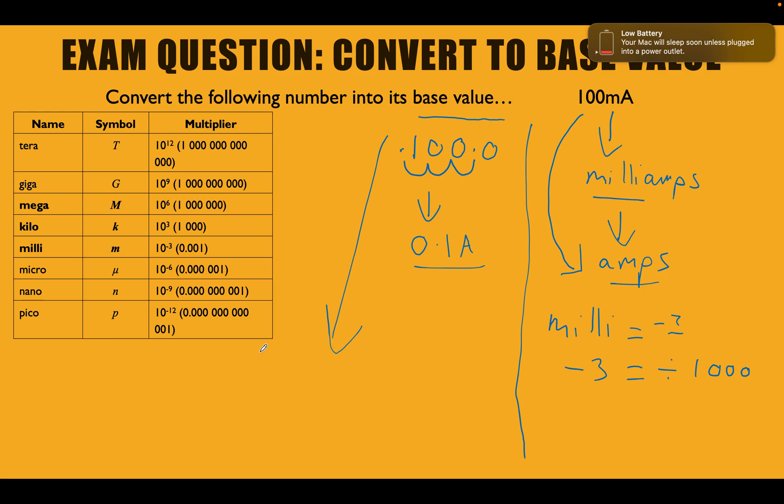Let's get down here. Let's do another way of doing this. We're still using the same thing, minus 3. But we've just told each other that milli is equal to minus 3. But minus 3 is the same as dividing by 1000. So in order to turn 100 milliamps into amps, we can also do 100 divided by 1000. And that's going to equal 0.1 amps. So it's exactly the same answer. So there's two ways of doing that.